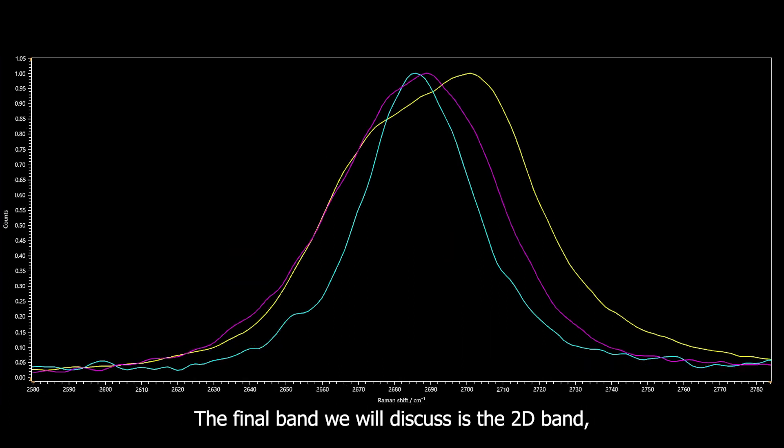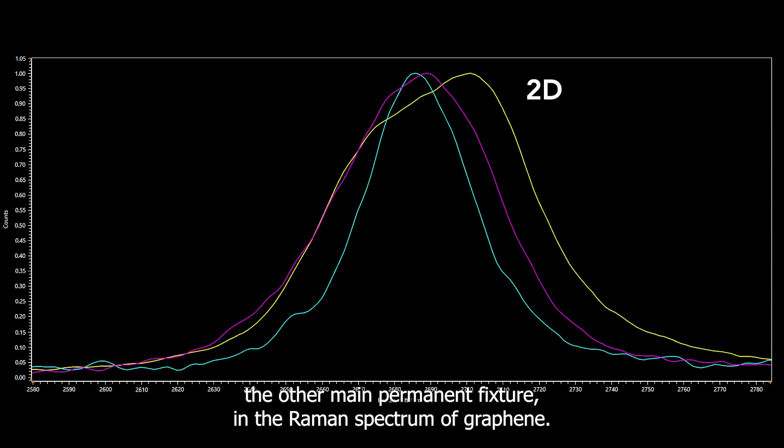The final band we will discuss is the 2D band, the other main permanent fixture in the Raman spectrum of graphene. This is an overtone of the D band but it is not associated with defects.